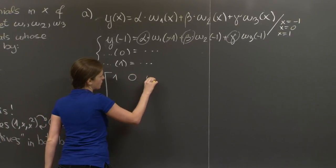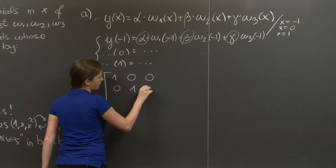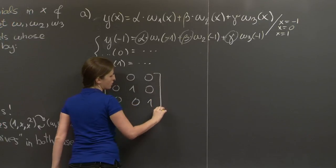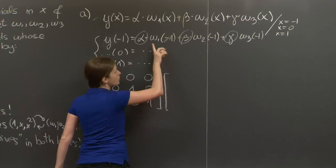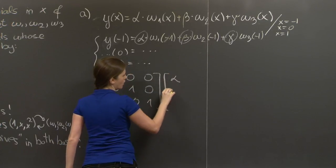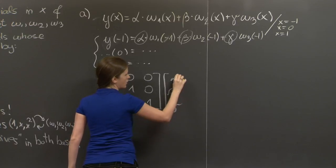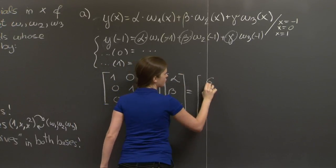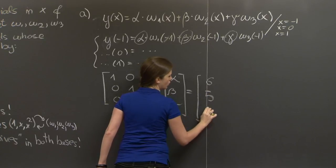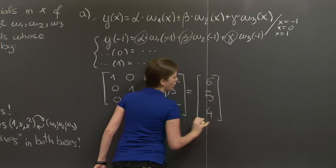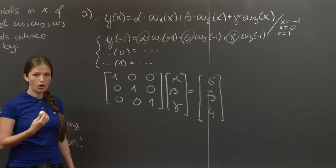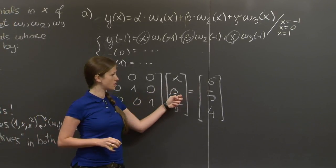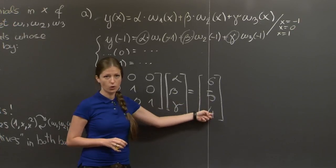So if you write this in a matrix and read off coefficients from there, you get the following system. This is the matrix of the system. These are the unknowns. And these are the values of the right-hand side. This is a very easy system to solve. We just get alpha = 6, beta = 5, and gamma = 4.